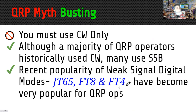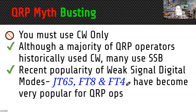On the myth that you must use CW only: although a majority of QRP operators historically used CW, many also use single sideband. There's no question it's easier to make a CW contact with lower power than SSB, but that's also true with 100 watts. Recent popularity of weak signal digital modes such as JT65, FT8, and FT4 have become very popular with QRP operators, and these modes work very well with QRP.